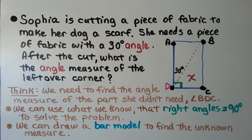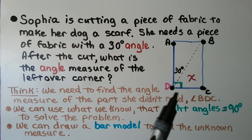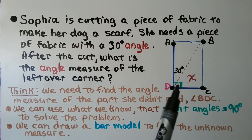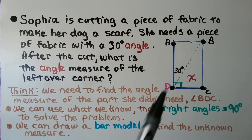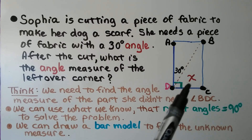Sophia is cutting a piece of fabric to make her dog a scarf, and she needs a piece of fabric with a 30 degree angle. After the cut — the dotted line — what is the angle measure of the leftover corner? We need to find the angle measure of the part she didn't need. She needed this part; she doesn't need this part.